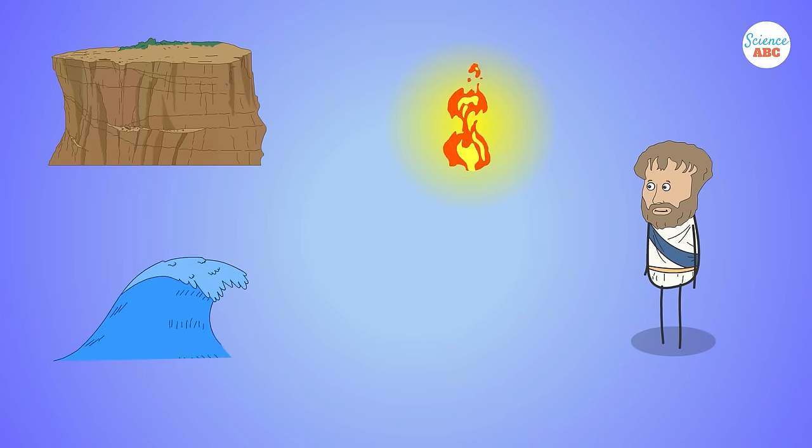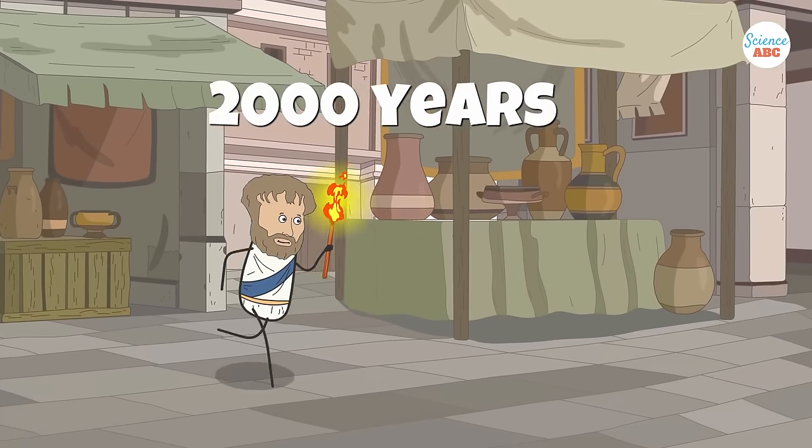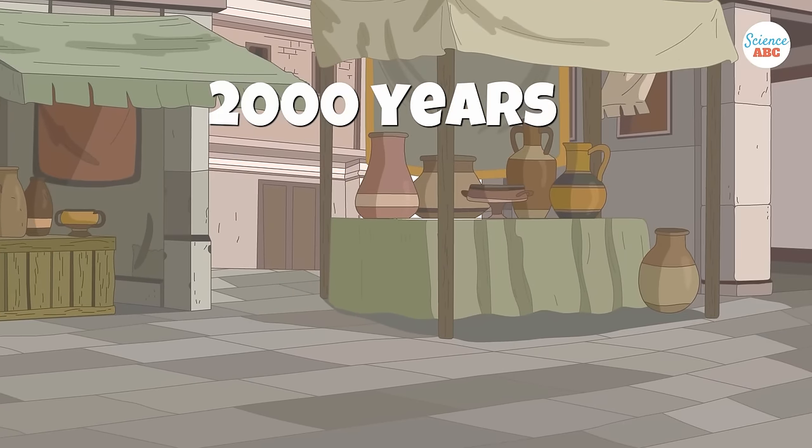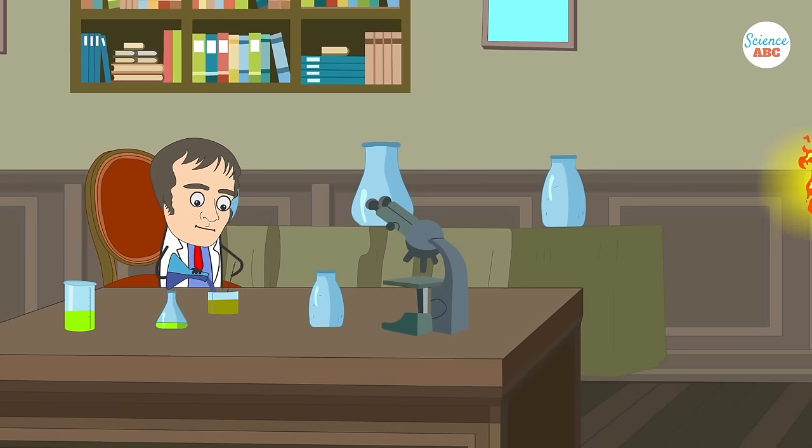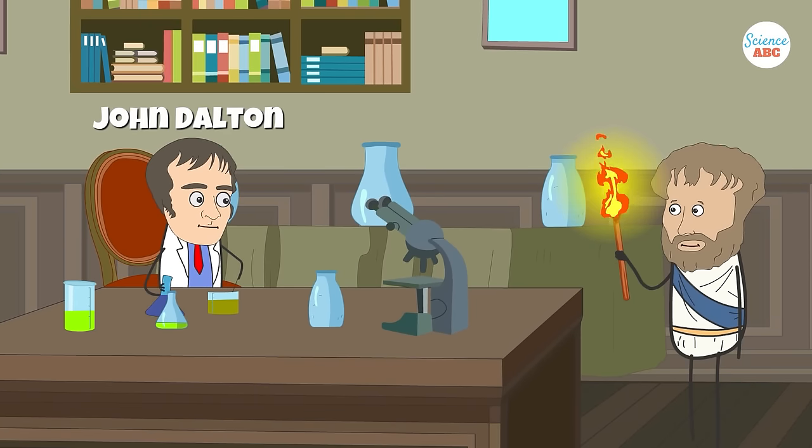Aristotle believed that everything on this planet was made of four elements: earth, fire, water, and air. The next step in atomic theory development didn't happen for nearly 2,000 years, when British chemist and meteorology enthusiast John Dalton raised some interesting questions.